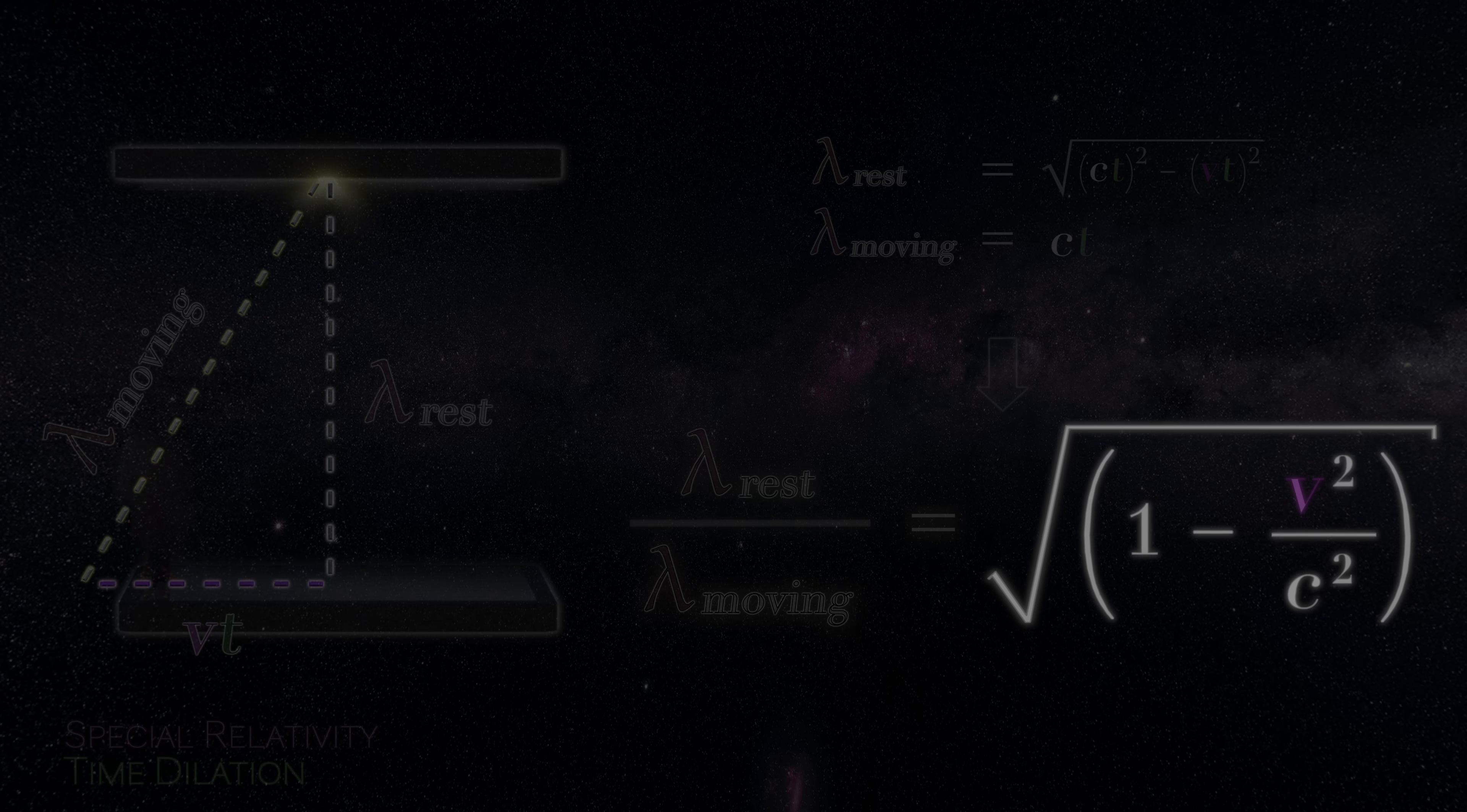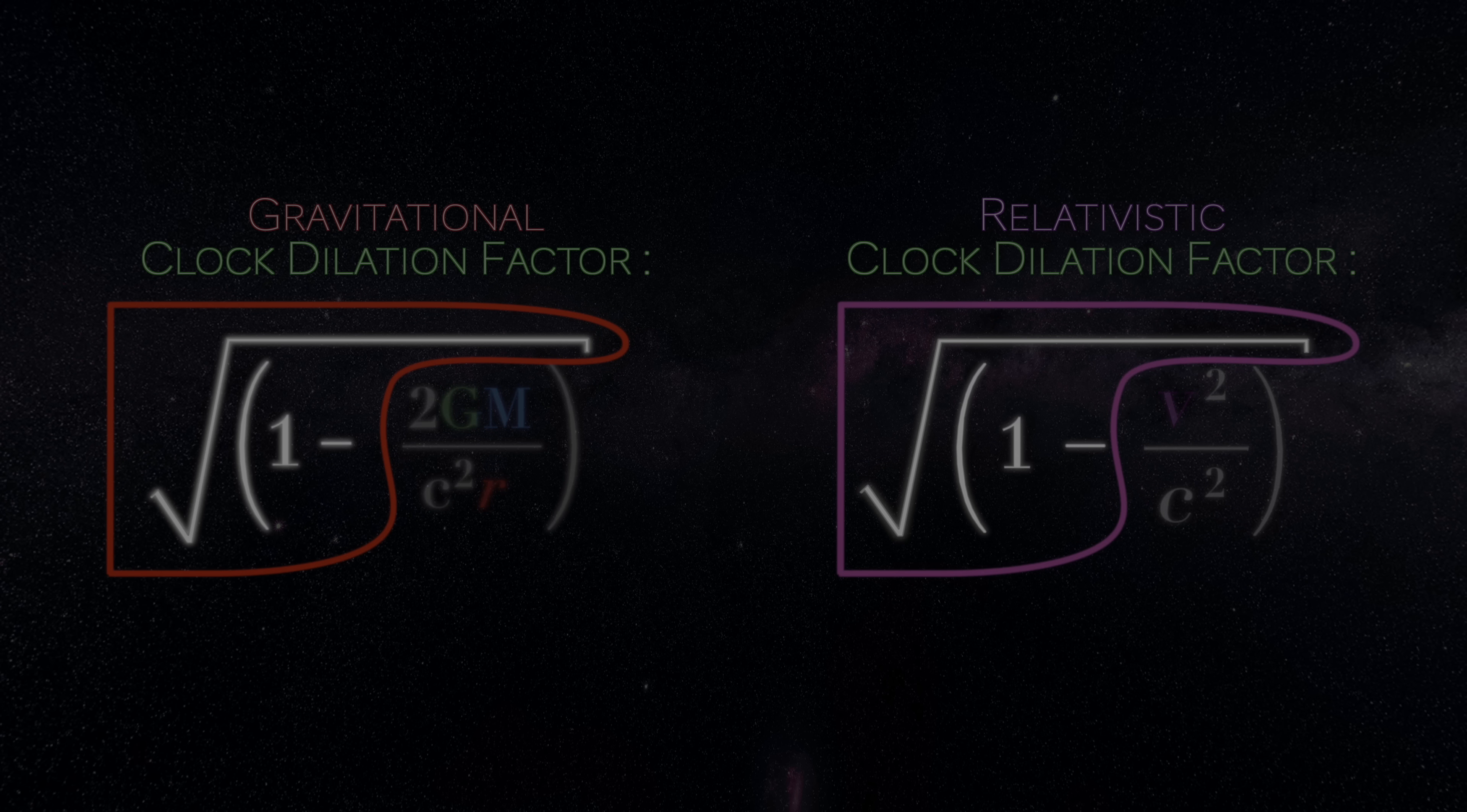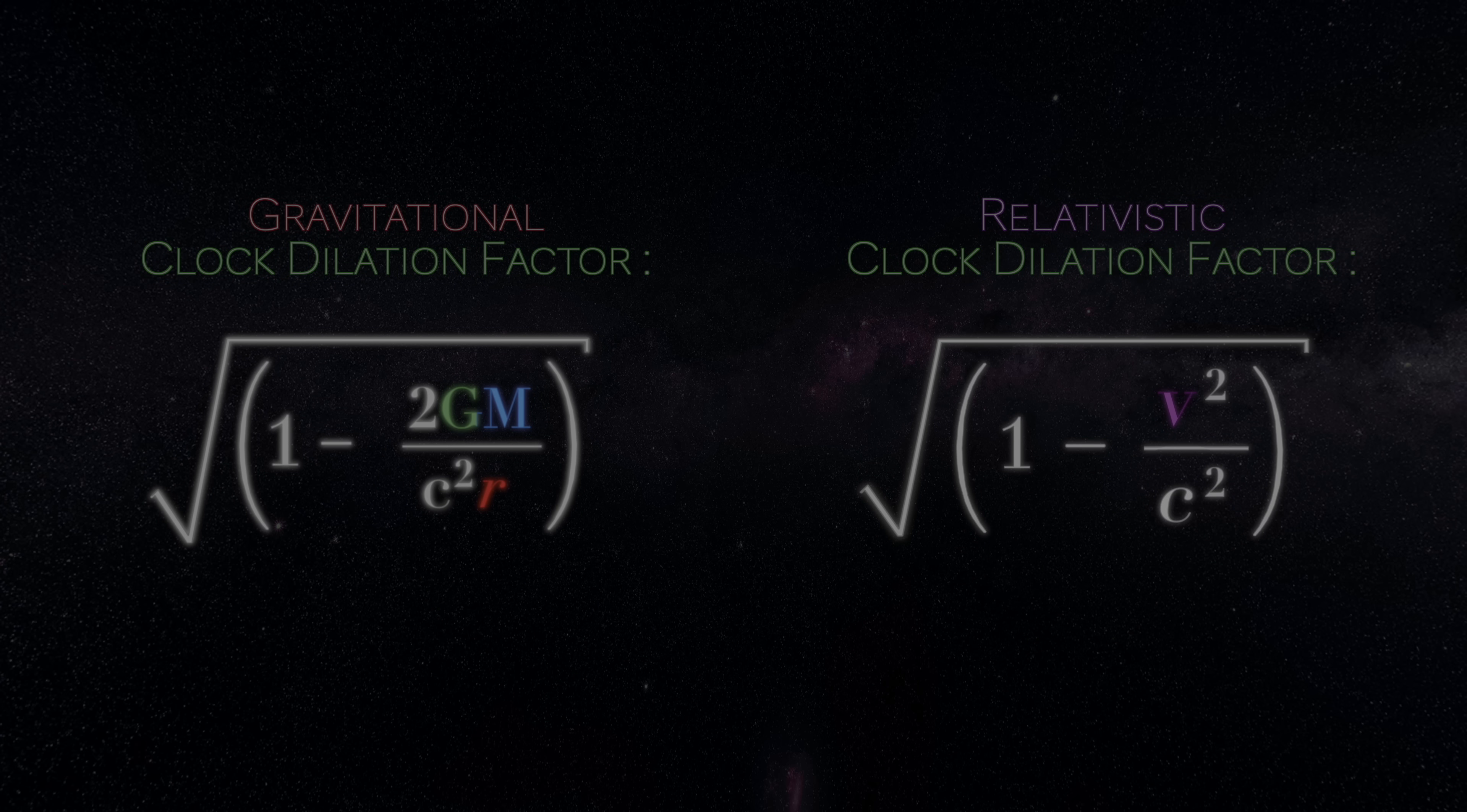Now, right away, we can notice something extremely curious. The expression for gravitational time dilation and relativistic time dilation have very similar forms. Both have a square root with a 1 minus beneath it, as well as a c squared in the denominator of the subtracted term. This similarity in structure now motivates us to make a sudden but intriguing conceptual leap. What if we interpreted the remaining quantity in the gravitational expression as being equal to some velocity squared?